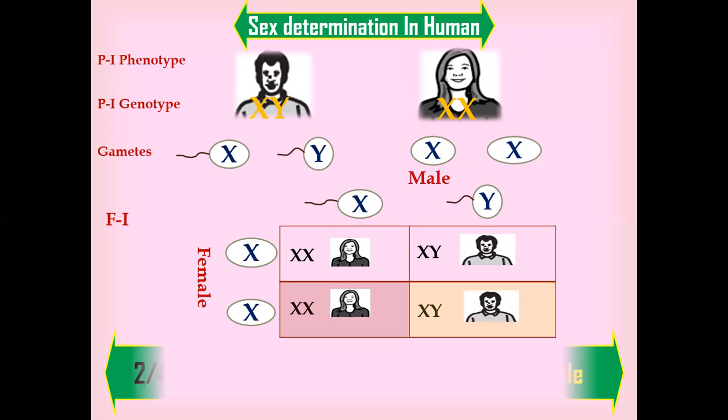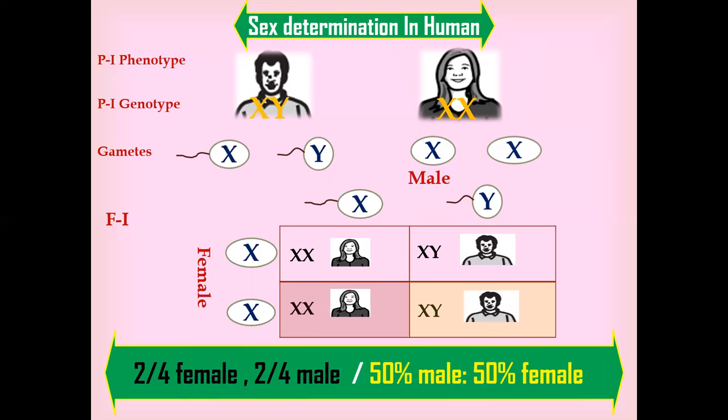If we calculate the phenotypic result, 2 out of 4 is female, while 2 out of 4 is male. The ratio will be male and female, and F1 generation will be 50-50%.